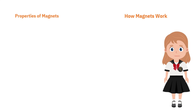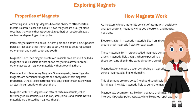The properties of magnets include attracting and repelling. Magnets can attract metals like iron, nickel, and cobalt. If two magnets are brought close together, they can attract — pull together — or repel — push apart — each other, depending on their poles.